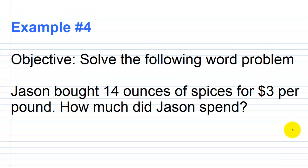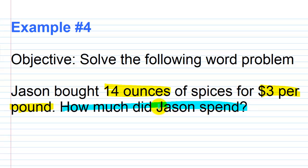For example four, the objective is to solve the following word problem. Jason bought 14 ounces of spices for $3 per pound. How much did Jason spend? This is a very simple problem. This is a simple unit conversion problem that we need to set up.